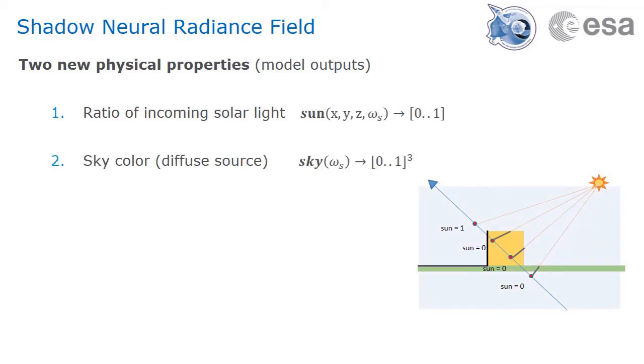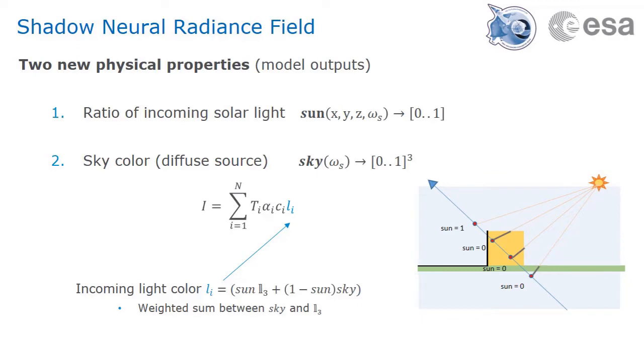The second output is a color vector which models an ambient light source, the sky. The total incoming light color, L, is the sum of the learned sky color and a white light source, weighted using the sun visibility function. This is multiplied by the illumination-independent albedo, C, to produce the outgoing light color, which is then used for alpha compositing.